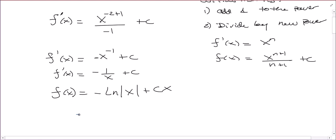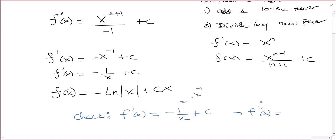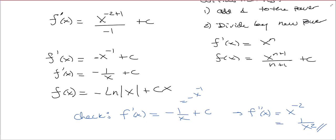So you can check: take the derivative. f prime of x will be negative 1 over x plus c. And then f double prime of x will be — this is negative x to the minus 1 — so negative times negative gives positive x to the minus 2. The derivative of the constant term is 0. So you just get 1 over x squared, which is what we started with.